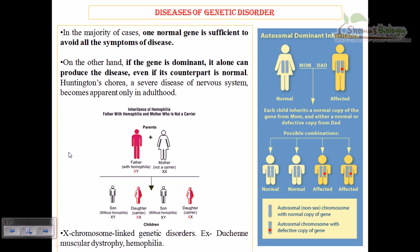In the majority of cases, one normal gene is sufficient to avoid all the disease symptoms. Because we are diploid, one set of genes comes from our mother and another from our father. If one set is a normal, disease-free gene, it is sufficient to avoid all symptoms. However, if we receive defective genes from both parents, we end up with disease symptoms.